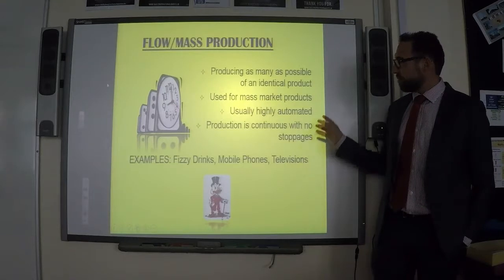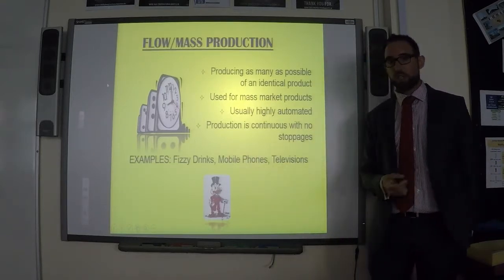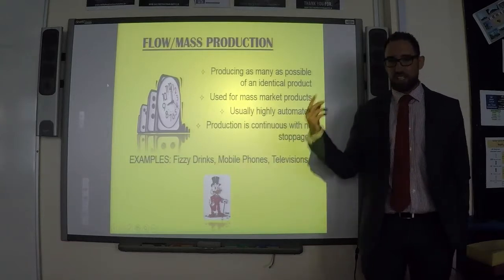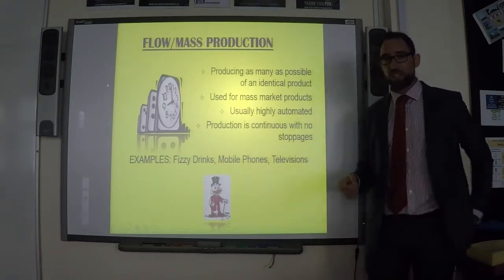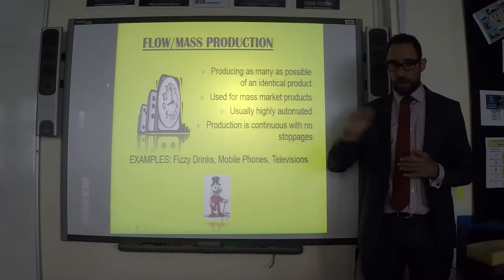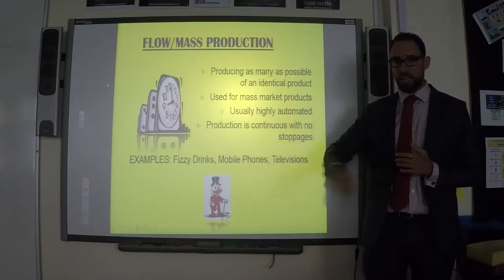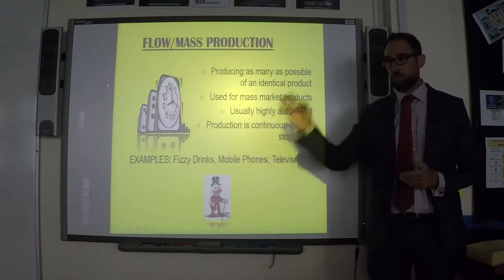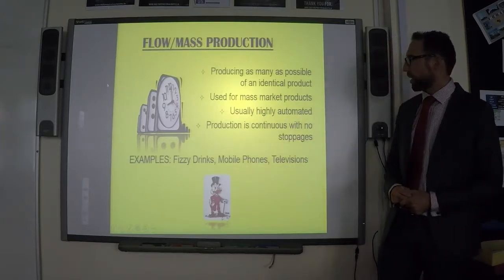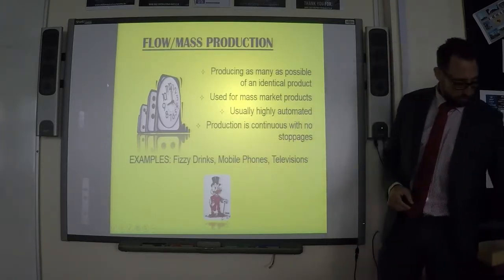The kinds of things made by flow production include fizzy drinks like Coca-Cola, TVs, cars, and chocolate bars. They come off the production line one after another — Mars bars or Twixes just keep going out, all looking exactly the same and they cannot be changed.